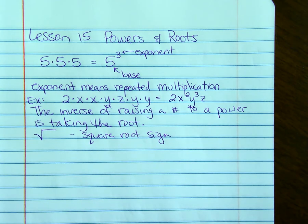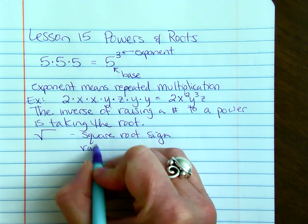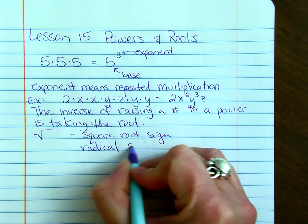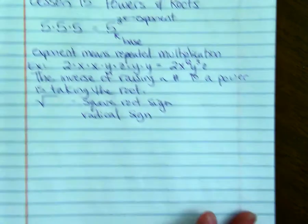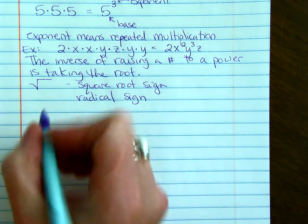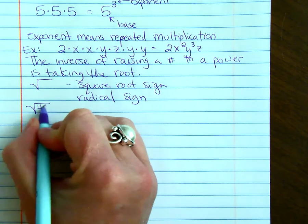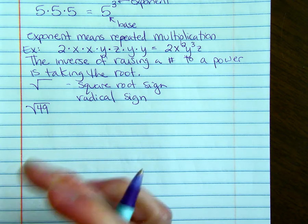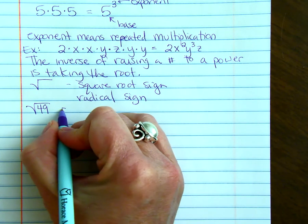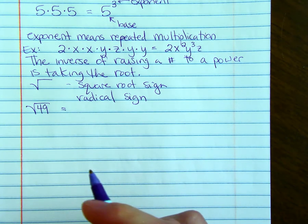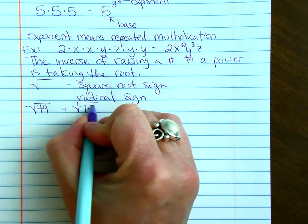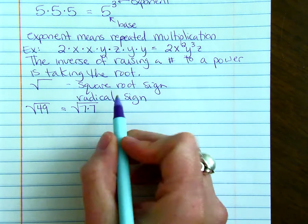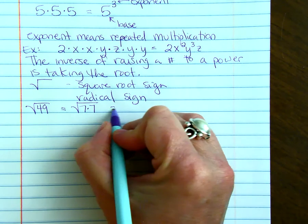Sometimes we call this the radical sign. When we have the square root of 49, we try to think of a number multiplied by itself. That number is 7.